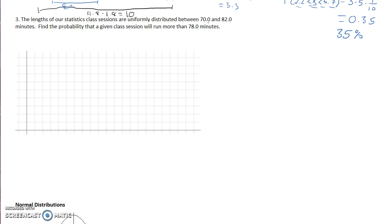But it says the lengths of our statistics classes are uniformly distributed between 70 and 82 minutes. Find the probability that a given class session will run more than 78 minutes.